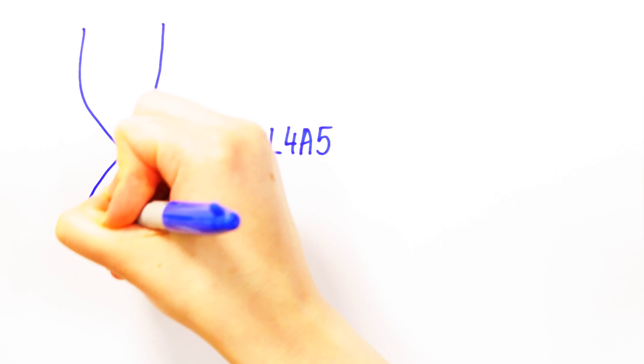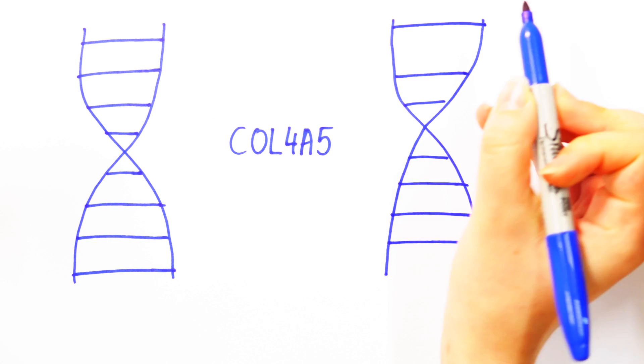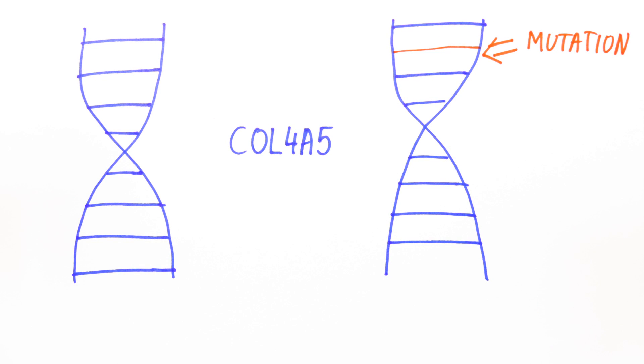In 1992, this was proven with the discovery of the gene COL4α5. A mistake or mutation in this gene was proven to cause Alport syndrome. The COL4α5 gene is on the X chromosome. A male has XY chromosomes, and a female has XX.